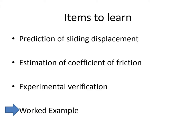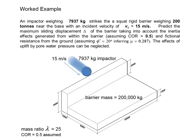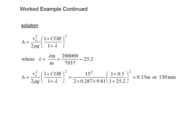A worked example is used to consolidate the understanding of the calculation method presented in this lecture. The worked example features an impactor, and the amount of sliding displacement resulted from the single strike is approximately 130 mm.